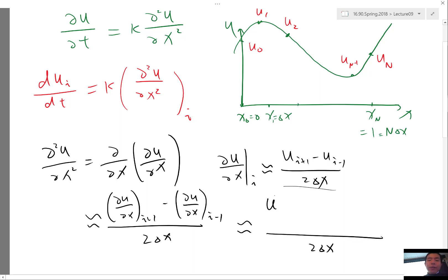ui plus 2 minus ui divided by delta x minus here would be if you put ui minus 1 here, here would be ui, here would be ui minus 2